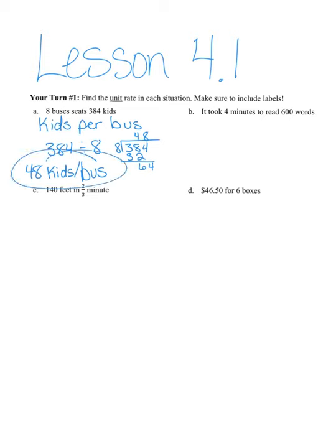For part B, we've got, it took four minutes to read 600 words. So the practical unit rate to find here is going to be words per minute.